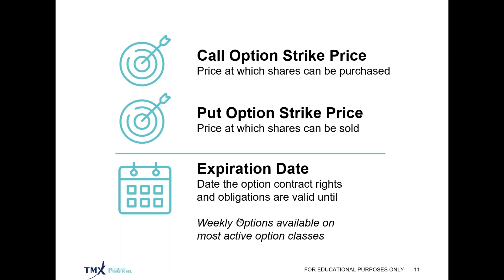The expiration date is essentially the date until which the option contract's rights and obligations are valid. All options expire, and we get to choose the expiration date based on our contract selection. We have to make sure we take that into consideration — as the option buyer, we want to give ourselves enough time for our expected move in the underlying to take place. As the option writer, recognize that your obligation to deliver the underlying shares is valid until the expiration date or until you close the position, which you can do at any point in time.